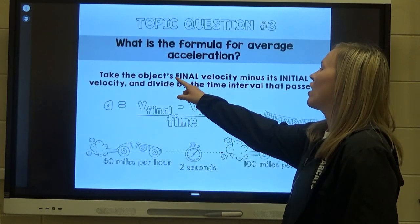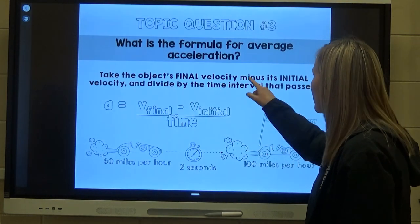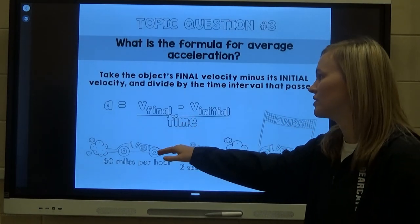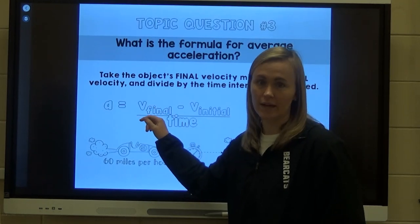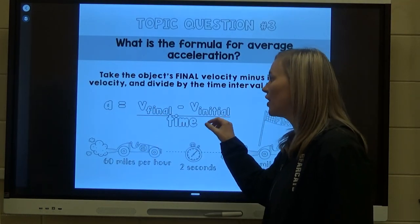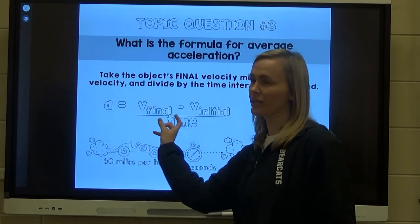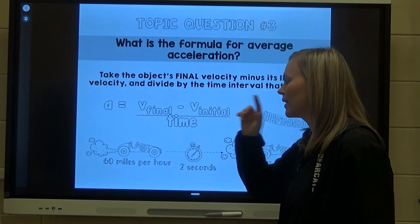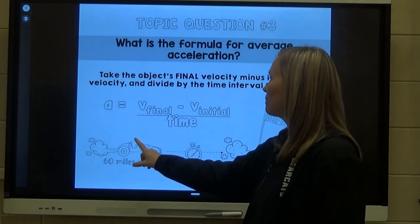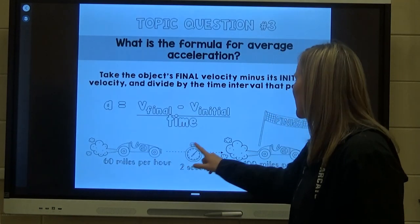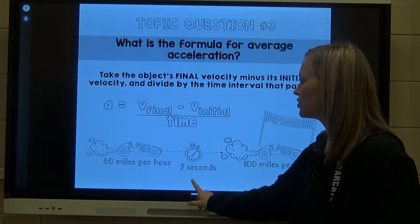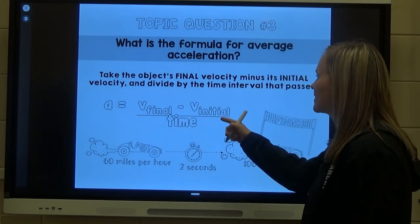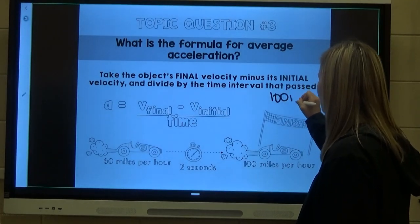What is the formula for average acceleration? Take an object's final velocity minus its initial velocity and divide by the time that's passed. So acceleration equals final velocity minus initial velocity, divided by time. For example, if a car begins going 60 miles per hour and finishes at 100 miles per hour, and it took two seconds to do so, we can solve for acceleration.